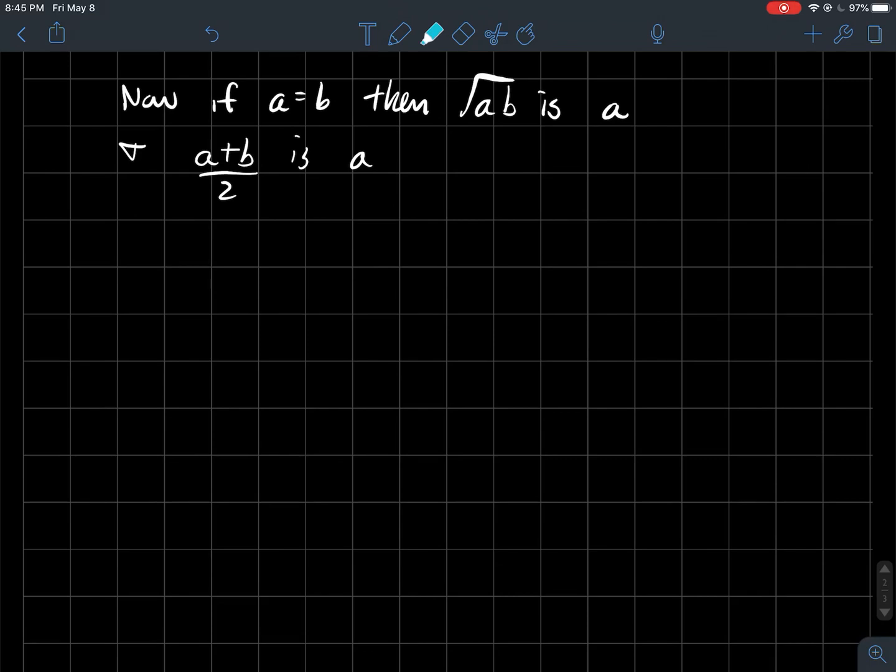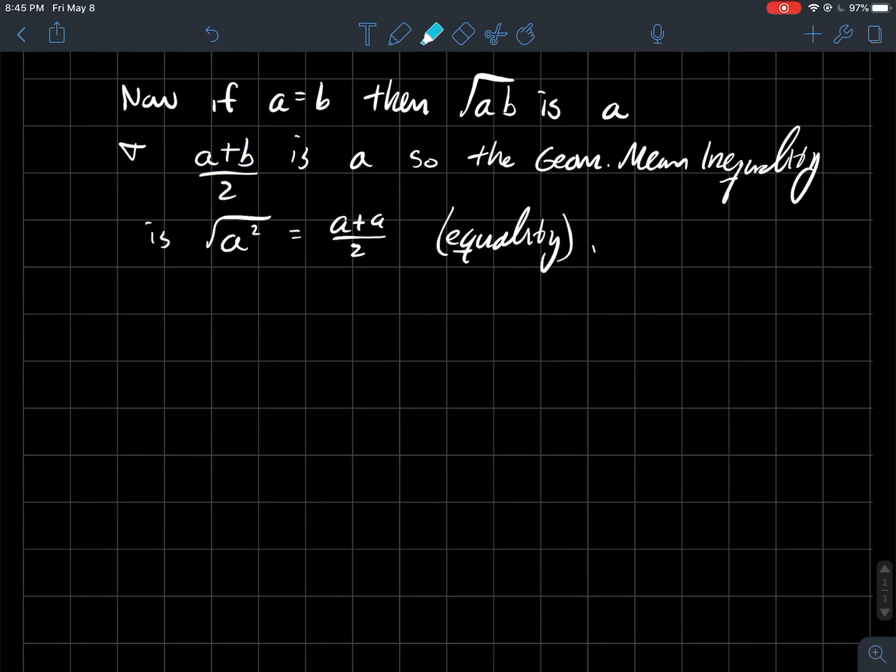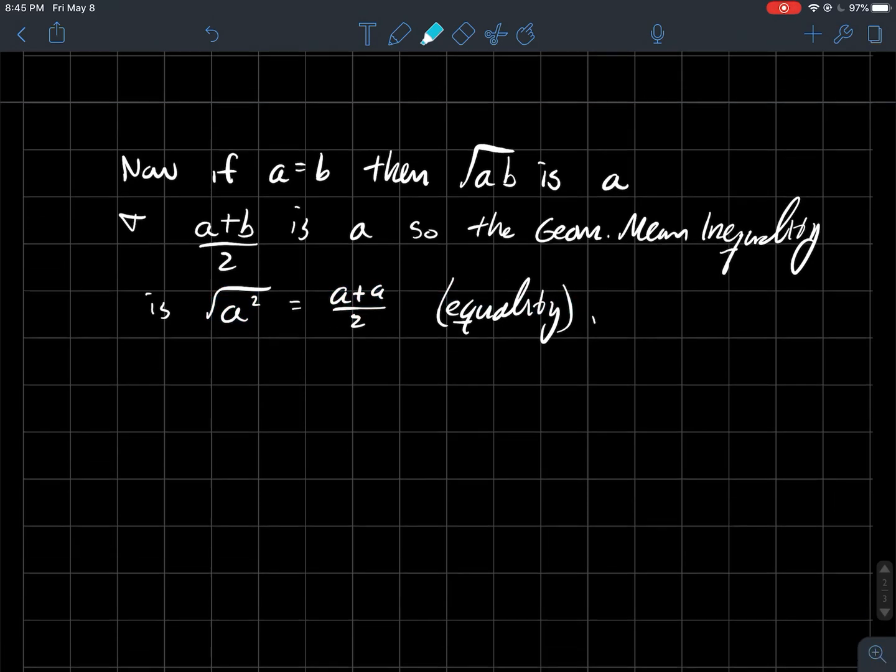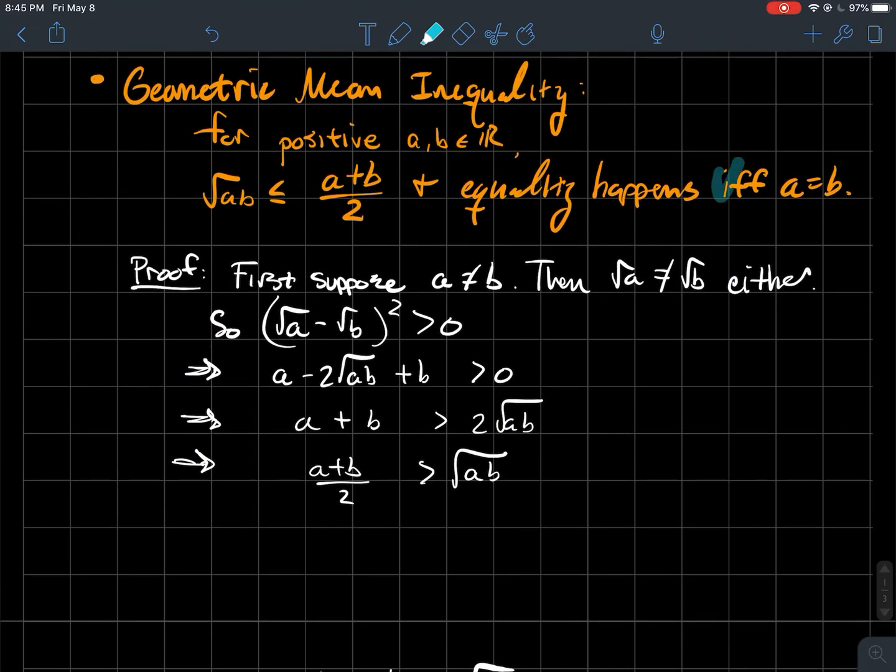So if A is equal to B, when you take the square root of A times B, that's really A squared if these are equal. So the square root of that is just A. Similarly, if you look at A plus B over 2, if A is equal to B, then this is just 2A over 2. Well, that's just A as well. So what am I saying to you? You get the same thing. You get an equality. So what we've just done is one direction of this if and only if.